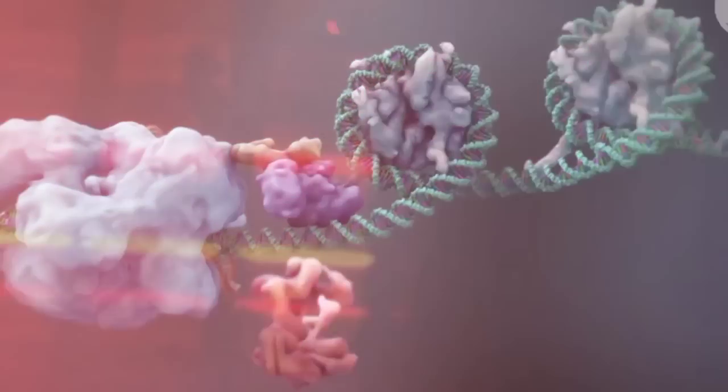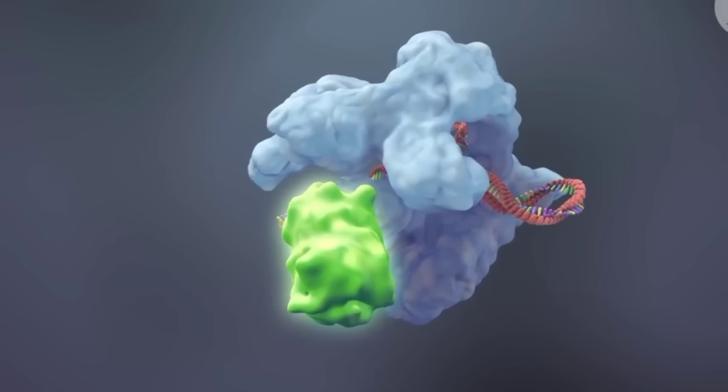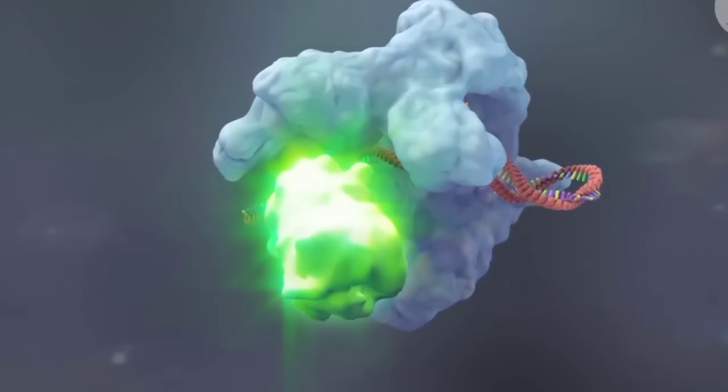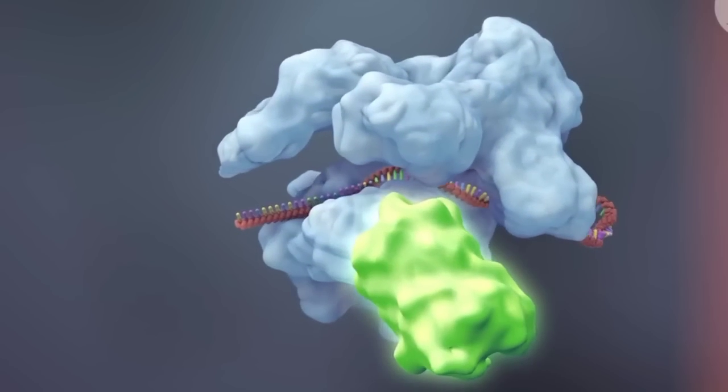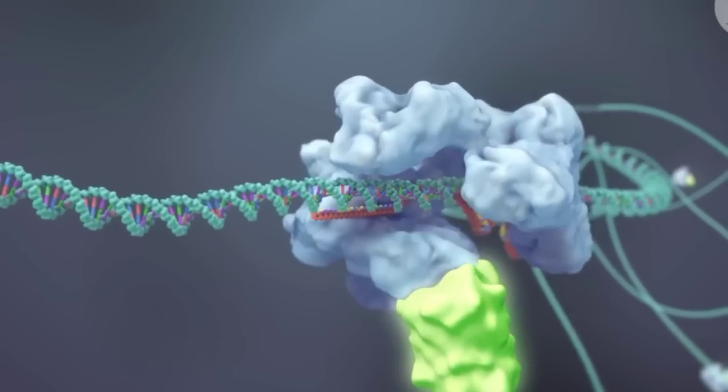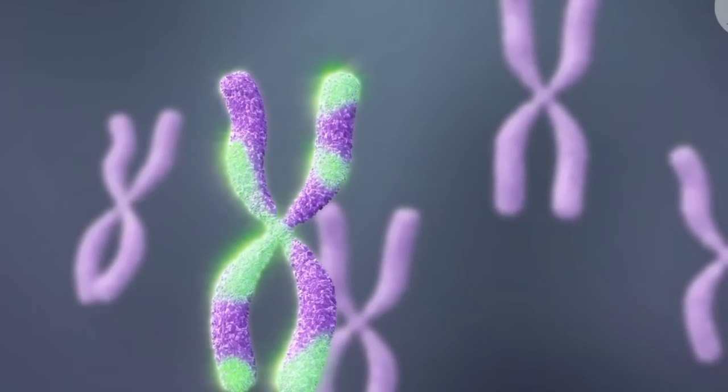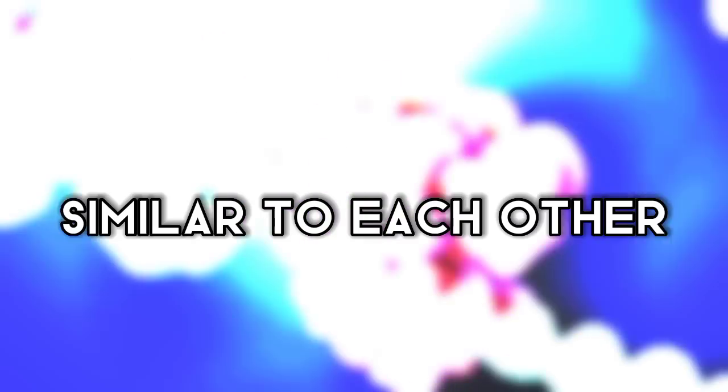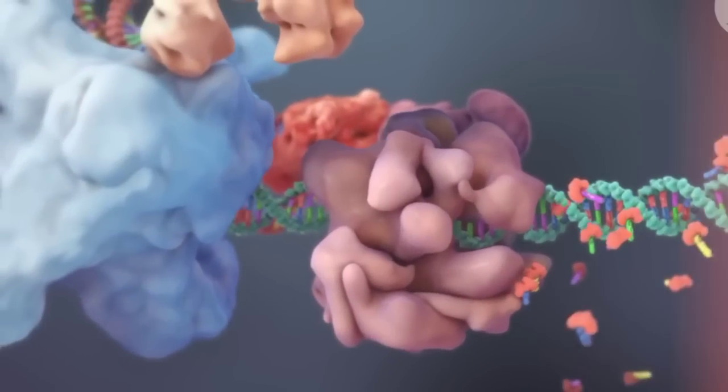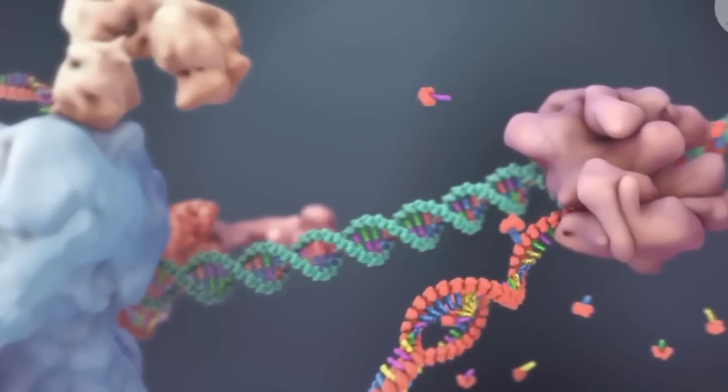When CRISPR sets out on its mission to modify specific genes, it does so through a system that locates and binds to a distinct segment of the DNA sequence. But here's the issue. DNA sequences can be incredibly similar to each other, leaving our gene editing tool to accidentally latch onto the wrong part.